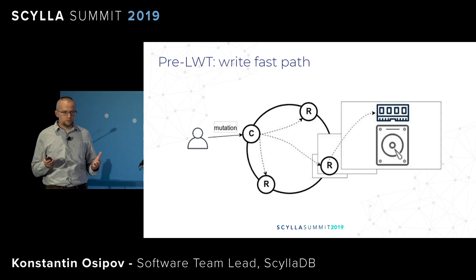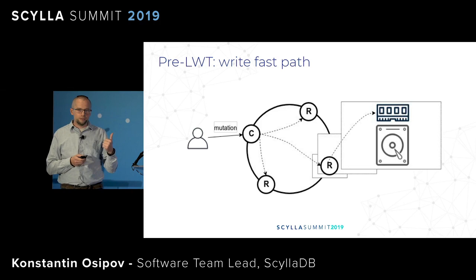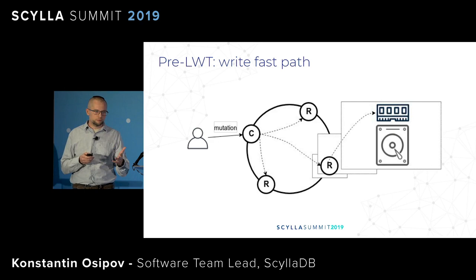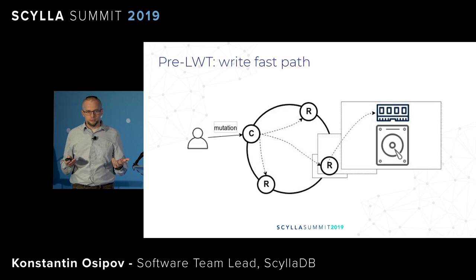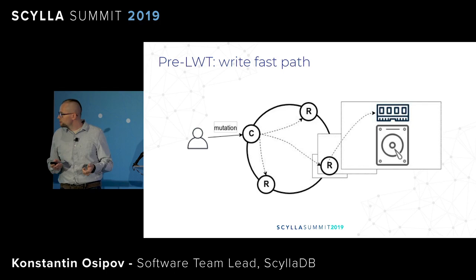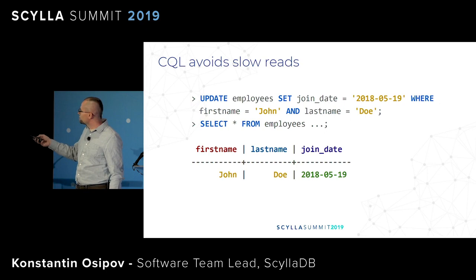The other reason writes do not return a result set is client-side timestamps. The eventual consistency model allows you to assign a timestamp on the client, and the history of mutations is built eventually — you merge mutations from all replicas. A concurrent update can change the same record on another replica, and you can even retroactively change history by adding a mutation with an old timestamp. So even if you get the record back, you wouldn't know what to do with it.